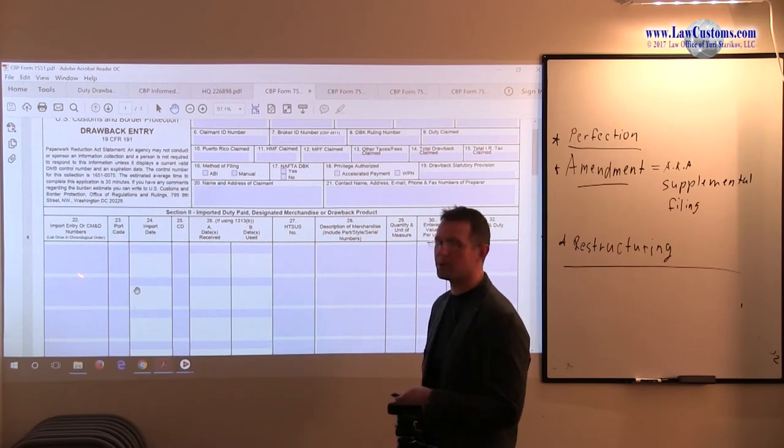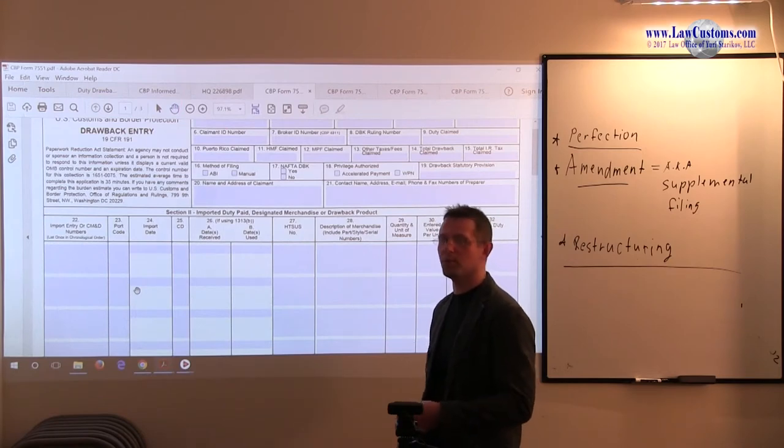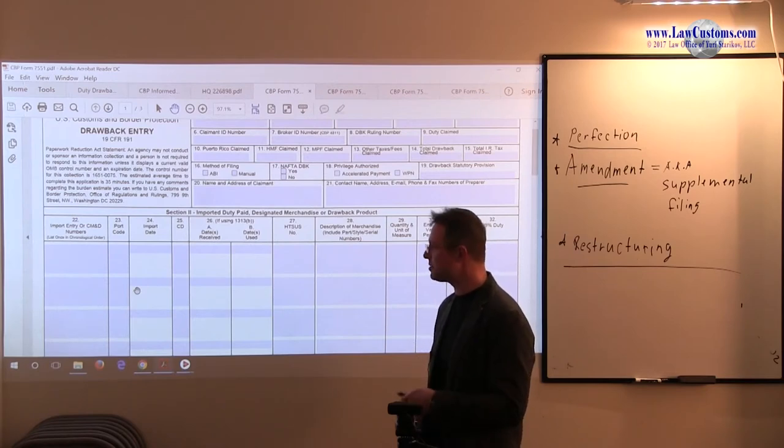But customs says, hey listen, why don't you just consolidate all your stuff? Instead of me writing out and giving you a separate drawback entry number for all your import entries, per one import entry, I just want to give one drawback number for many entries. To me it's more efficient, so I don't have to keep track and enter this into the database.